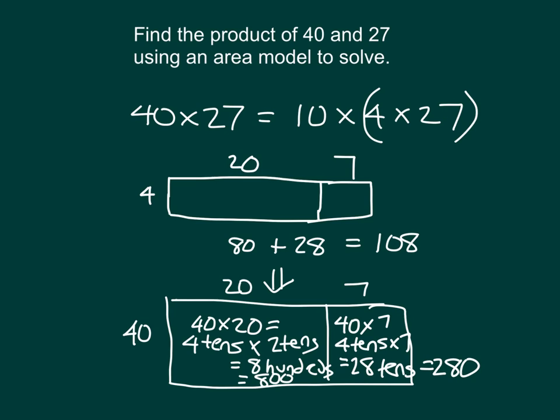What would I do to figure out this area? Well, I'll take 800 and add it together with the 280. And 800 plus 280 equals 1,080. So the product of 40 and 27 is 1,080.